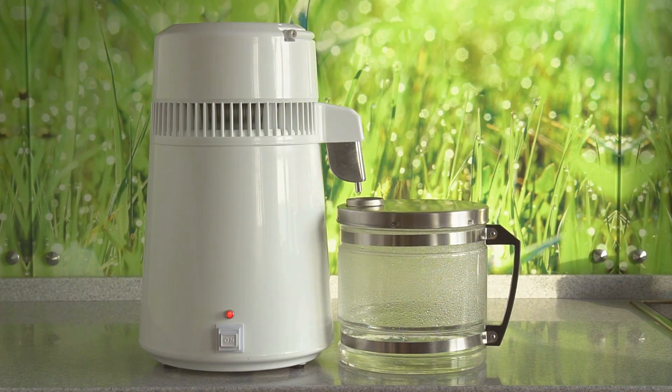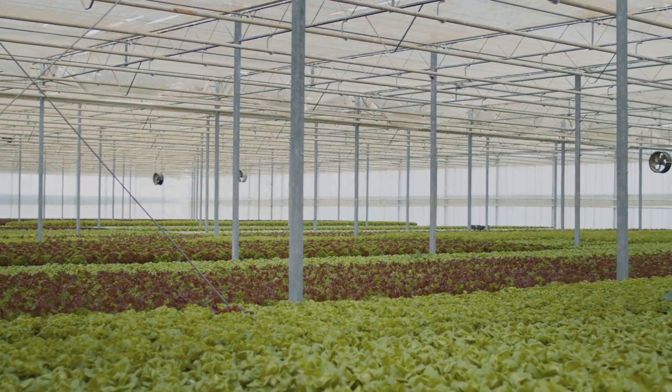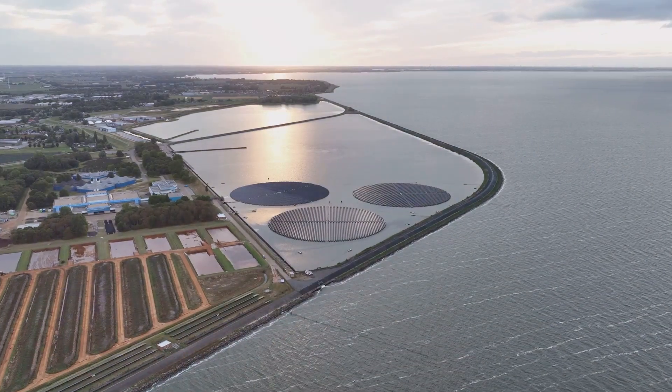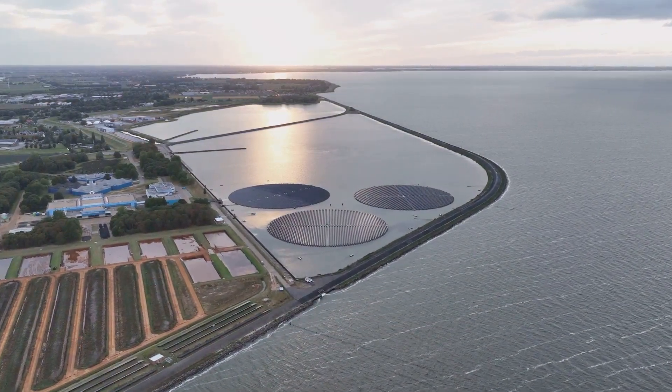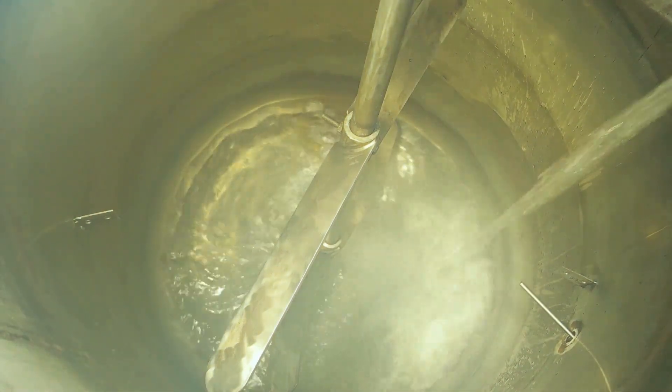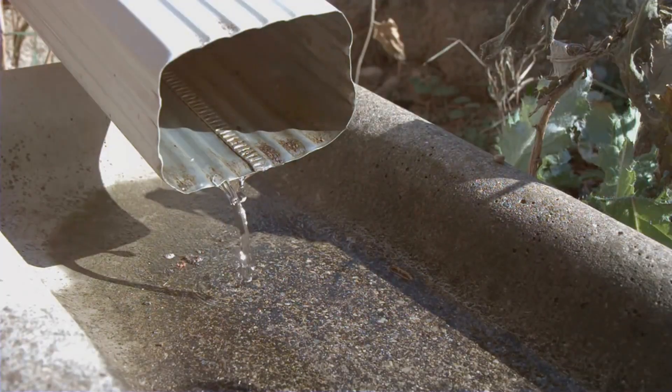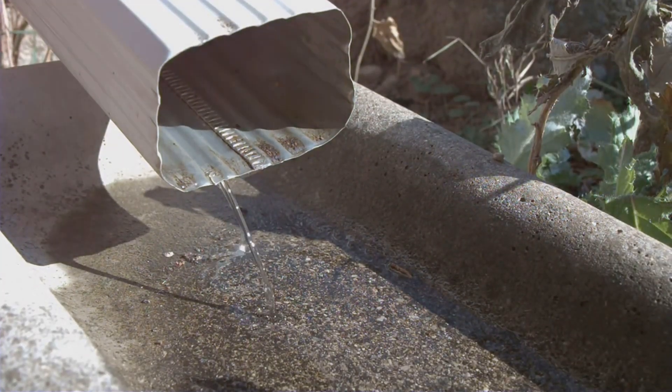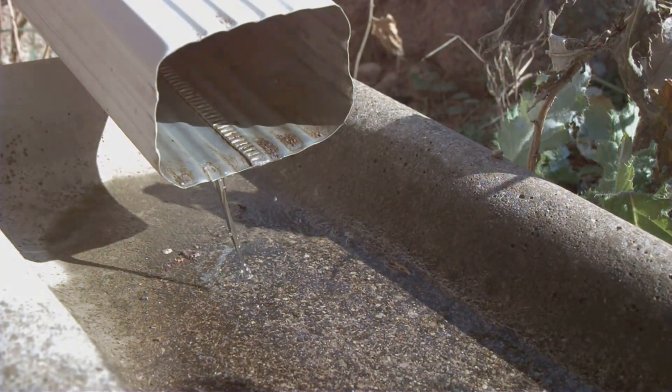Solar stills are simple devices that mimic the natural water cycle to purify water using solar energy. They're like mini greenhouses that produce clean water. A basic solar still consists of a shallow basin with a transparent cover. The basin is filled with water, and the cover traps heat from the sun. As the water heats up, it evaporates and condenses on the underside of the cover. The condensed water, now pure, trickles down the sloping cover and is collected in a separate channel.